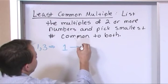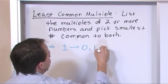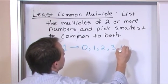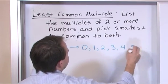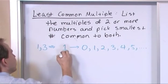But the way we do that, the multiples of the number one are zero, one, two, three, four, five, dot dot dot and keep going on and on.